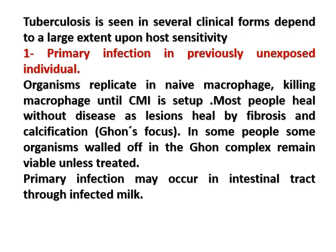Tuberculosis is seen in several clinical forms depending largely on host sensitivity. The first is primary infection in previously unexposed individuals: organisms replicate in naive macrophages, killing them until cell-mediated immunity is established. Most people heal without disease, as lesions heal by fibrosis and calcification, forming the Ghon focus. In some people, some organisms walled off in the Ghon complex remain viable unless treated. Primary infection may also occur in the intestinal tract through infected milk.